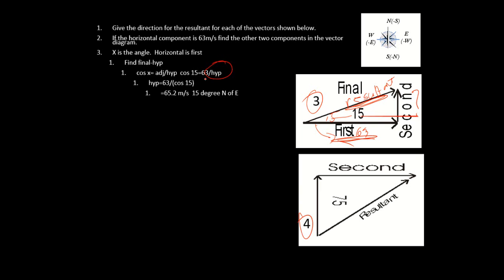Danger! Is your calculator in degrees? If you don't have it in degrees it won't work out. Cosine of 45 is 0.707, and sine of 45 is also 0.707. If you punch in sine or cosine of 45 and it's not giving you 0.707, your calculator is not in degrees — check it out.